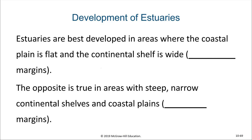The best and most developed estuaries are going to be in areas where the coastal plain is flat and the continental shelf is wide — these are the passive margins. Whereas active margins usually have a very narrow continental shelf and a more abrupt transition from land to sea, so on an active margin you aren't going to have an abundance of estuaries.